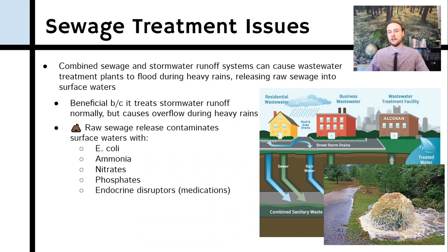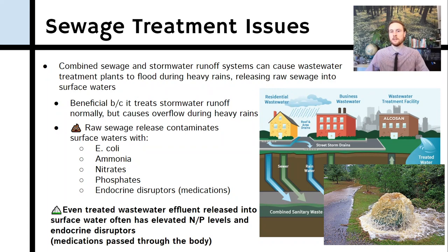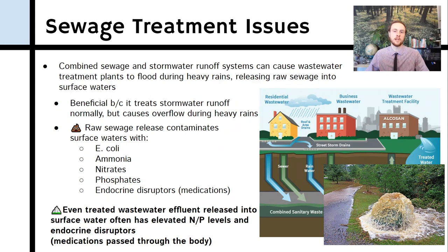This releases things like E. coli, ammonia, nitrates, phosphates, and even endocrine disruptors — leftover medical compounds that pass through the human body — out into the environment. Even when these systems don't overflow and are processed properly, we still often have elevated nitrogen and phosphorus levels in the discharged effluent, as well as persistent organic pollutants from medications. It's generally accepted by those who study river systems that wastewater treatment plants result in some form of nutrient pollution and endocrine disruptors or POPs leaving these facilities, specifically from compounds that come from human medications.